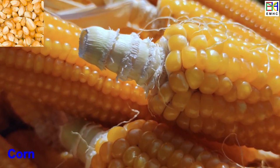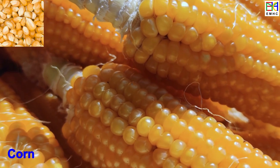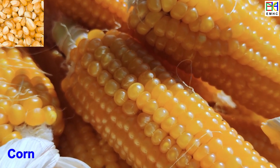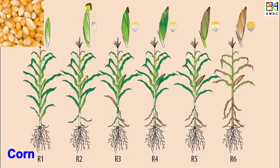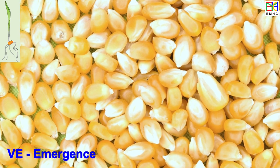The life growth stages of corn can be divided into two categories: vegetative growth stages from VE to VT, and reproductive growth stages from R1 to R6. In general, corn is typically planted in the spring.